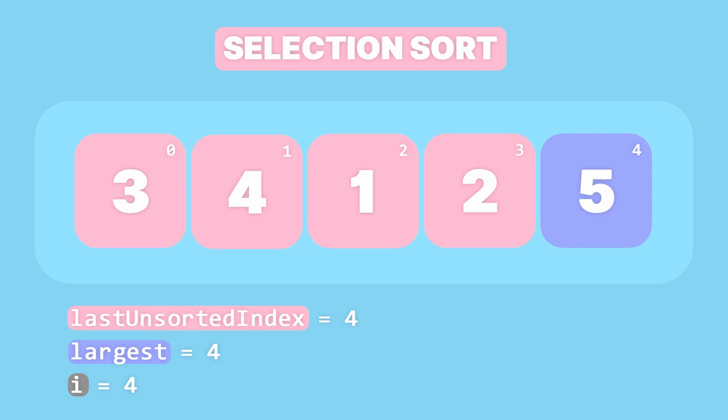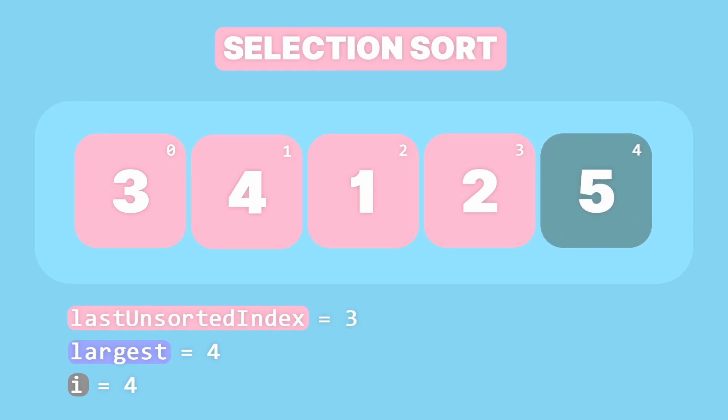Note that the largest element is already in its correct position, therefore in this case no swapping is needed and we just decrement the last unsorted index and it becomes 3. Now everything from index 0 to index 3 represents the unsorted partition while everything from index 4 represents the sorted partition.